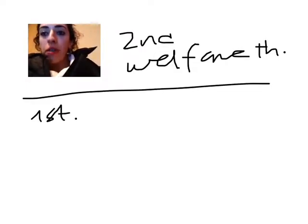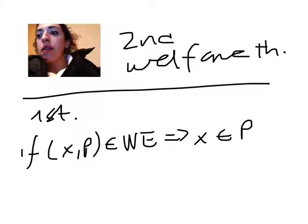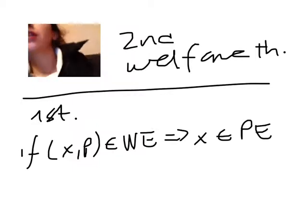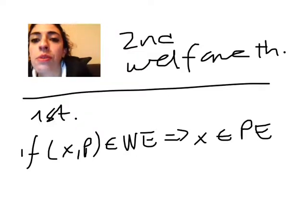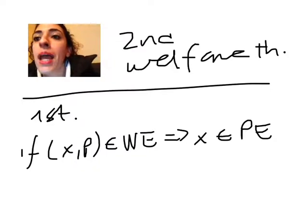Let me just recall that the first welfare theorem states if x and p are part of a Walrasian equilibrium, then x is Pareto-efficient. So we just saw this with the Edgeworth box, for example, that the outcome, the final allocation, was going to be in the contract curve, so it's going to be Pareto-efficient. But we also said that the opposite was not true, that if I have an allocation that is Pareto-efficient, not necessarily will it be a Walrasian equilibrium, and that is what the second welfare theorem is about.